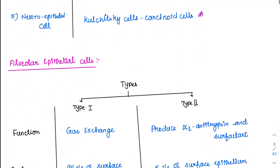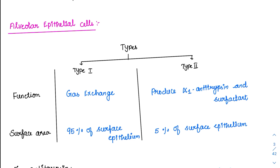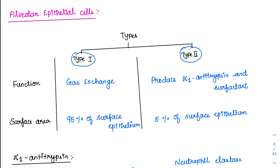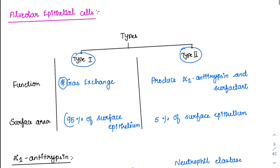Coming to the alveolar epithelial cells — this is where MCQs are constantly asked. There are two types: type 1 and type 2. The only major function of the lung alveoli is gaseous exchange — ultimately we need oxygen to go inside the body. That's why type 1 cells, which are involved in gaseous exchange, cover 95% of the surface epithelium. But for MCQ purposes, we are concerned with type 2, because it produces two most important substances: alpha-1 antitrypsin and surfactant. Type 2 covers 5% of the surface epithelium.